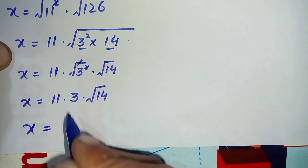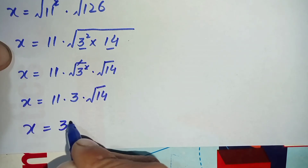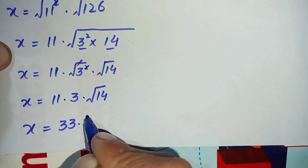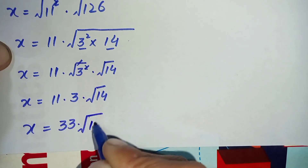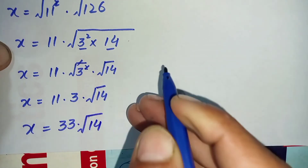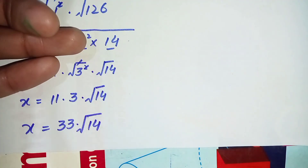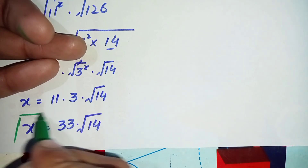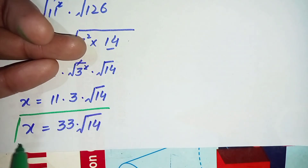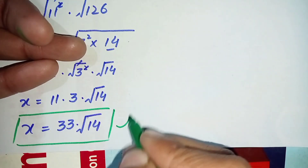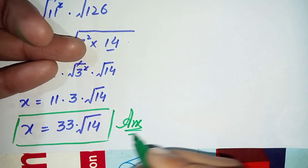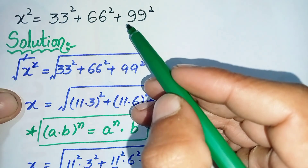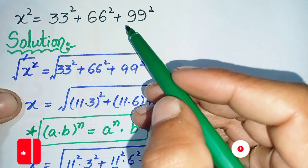So x is equal to 11 times 3 times the square root of 14, which gives us x is equal to 33 times the square root of 14. This is the final answer and solution of this interesting exponential math problem.